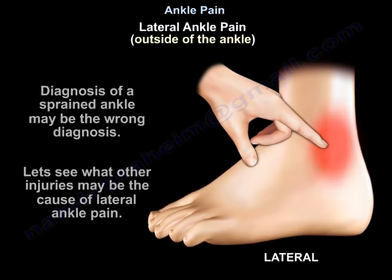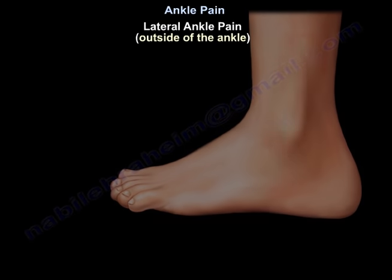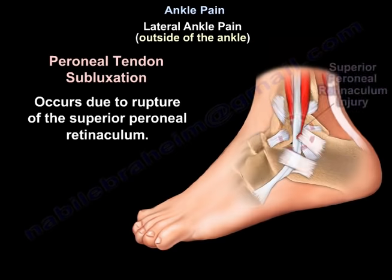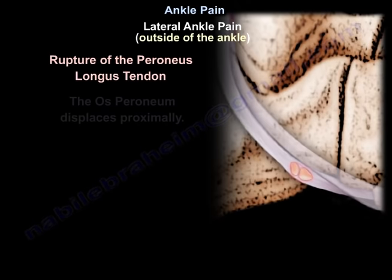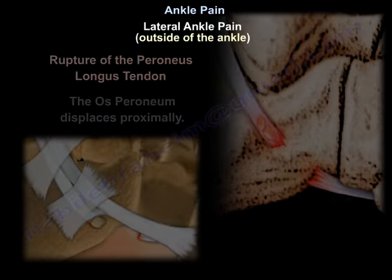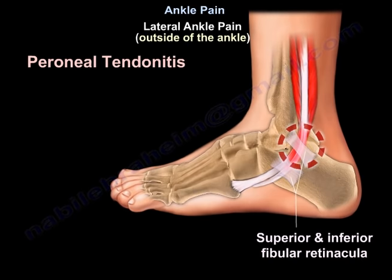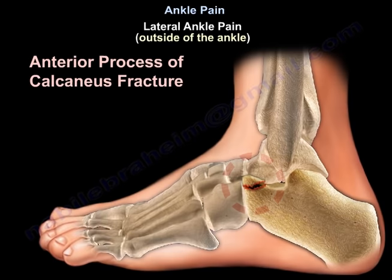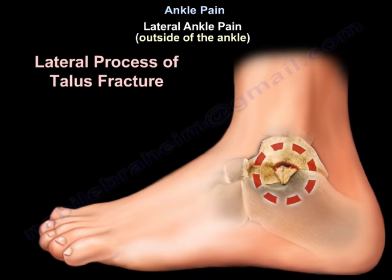A diagnosis of sprained ankle may be incorrect, as other conditions can cause pain on the outer side of the ankle. These include peroneal tendon subluxation due to rupture of the superior peroneal retinaculum, rupture of the peroneal tendon with proximal displacement of the os peroneum, peroneal tendonitis, an anterior process of the calcaneus fracture, or a lateral process of the talus fracture.